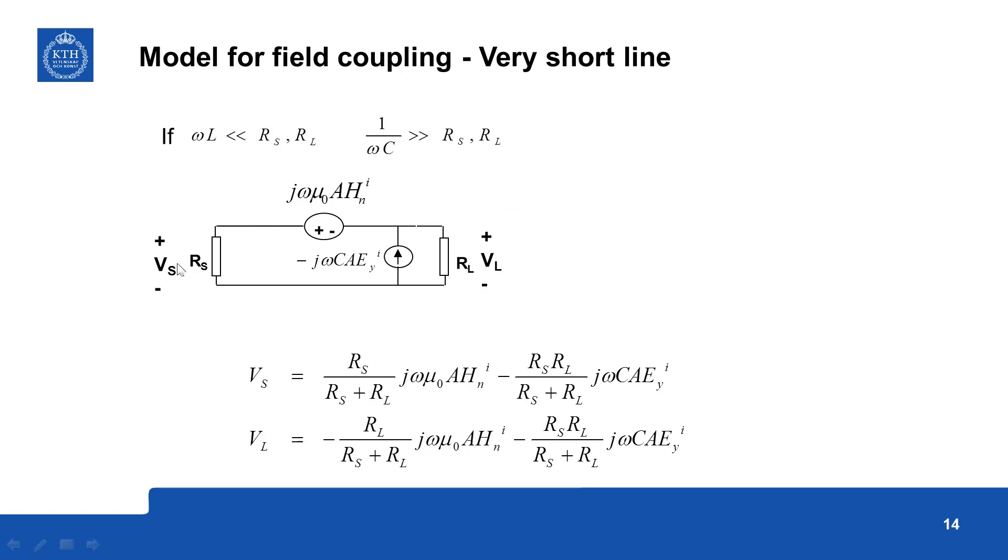So we solve for Vs that will be, we can apply superposition theorem, first this source, so total current is this voltage divided by some of these currents, this voltage divided by sum of the resistances multiplied by Rs will give you this voltage due to this source.